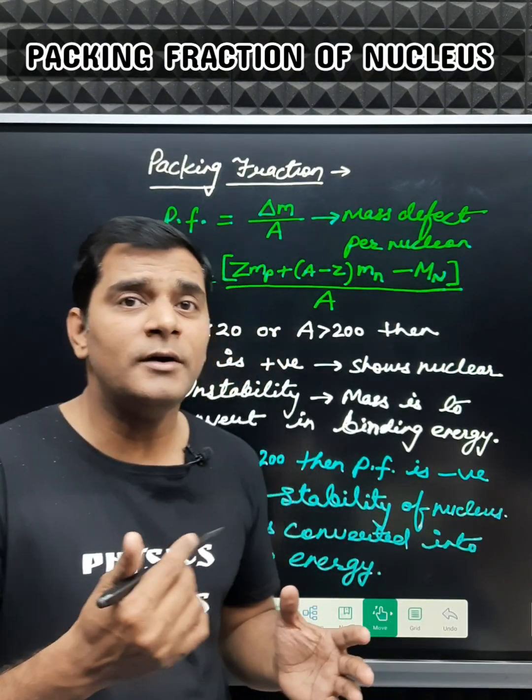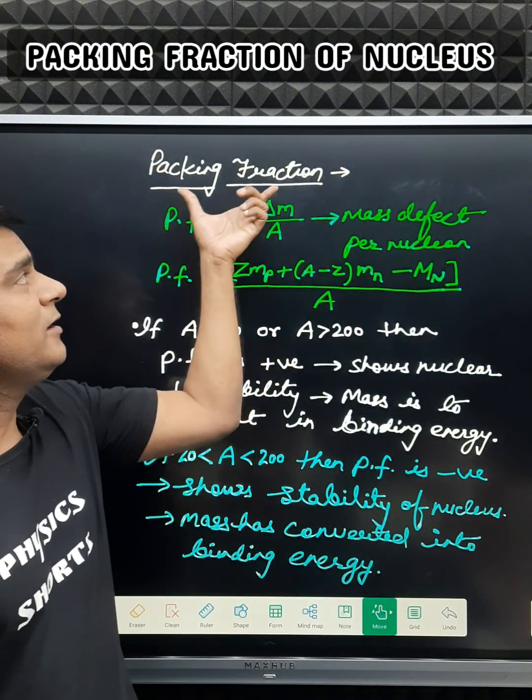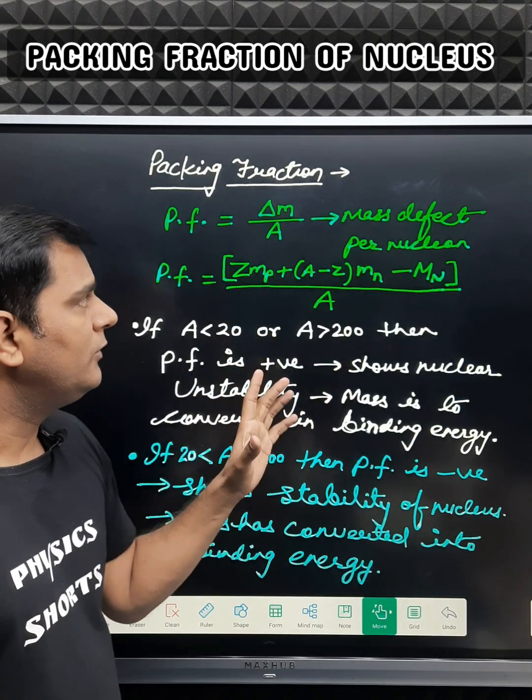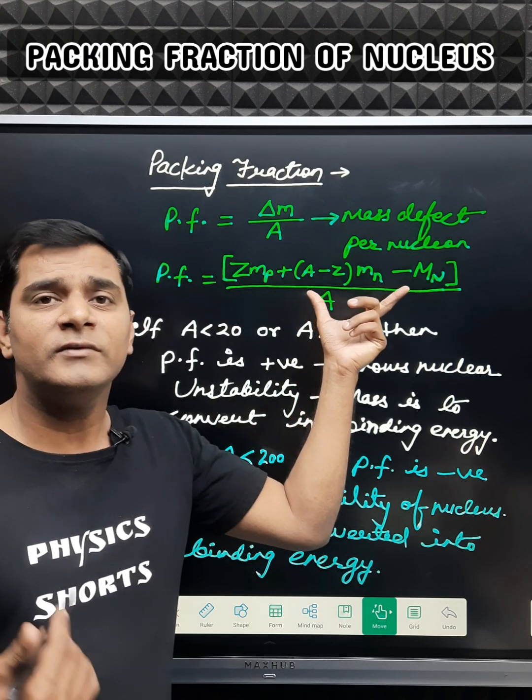The mass defect of nucleus per nucleon is defined as the packing fraction. Delta m by A (Δm/A) is the mass defect per nucleon, which is called the packing fraction. If we put the value of this mass